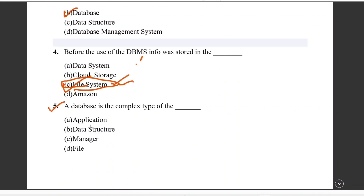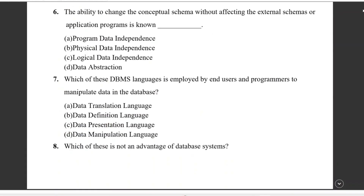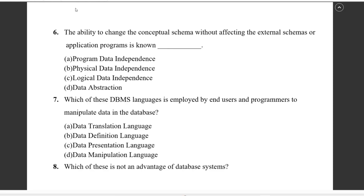Question number five: a database is a complex type of data structure — not just an application. Yes, it is definitely an application software, but it is basically a data structure. Data is stored, properly accessed, and managed.